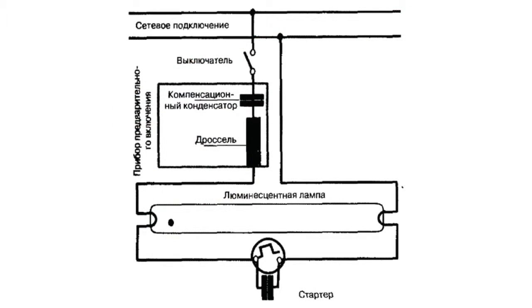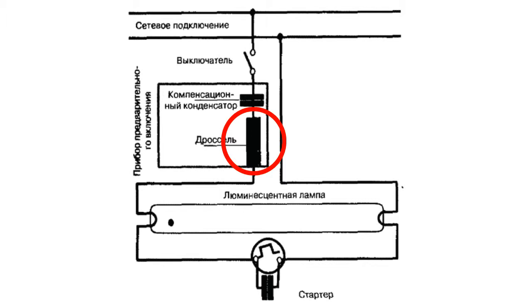The electrodes of the starter cool down, the bimetallic plate straightens, and a gap is formed between the two electrodes. The current within the circuit decreases sharply, and a short-time high voltage, or self-induction voltage, appears in the throttle, hindering the reduction of the current. Together with the network voltage, the self-induction voltage creates a voltage impulse within the lamp, which is sufficient for the appearance of an electric charge in the gas.